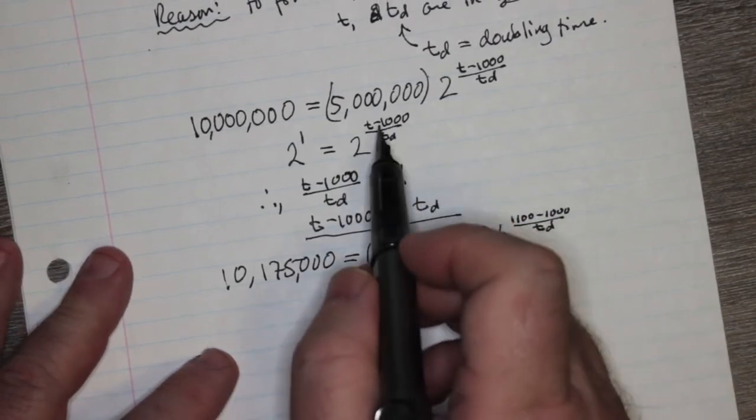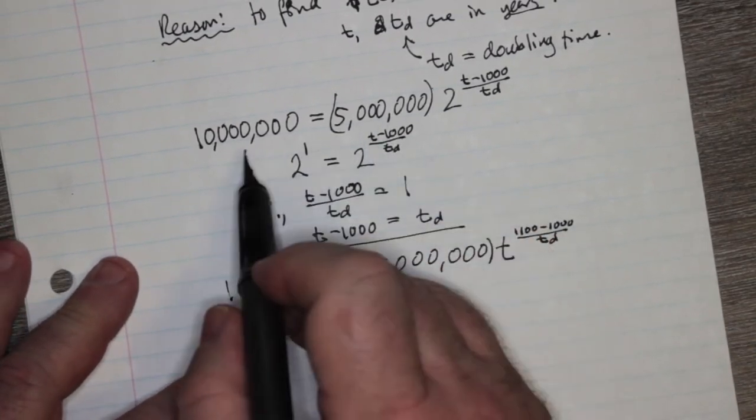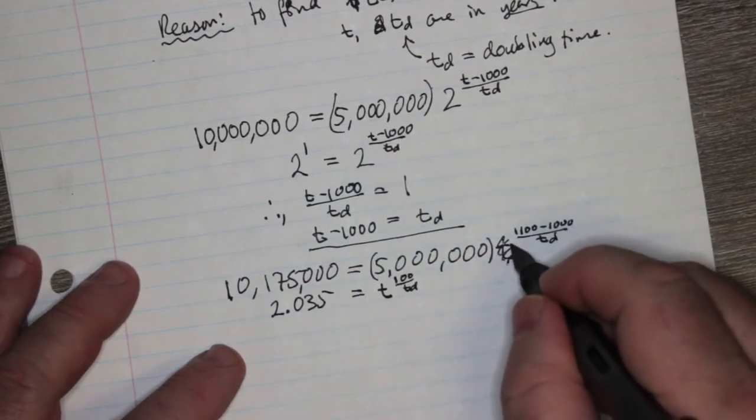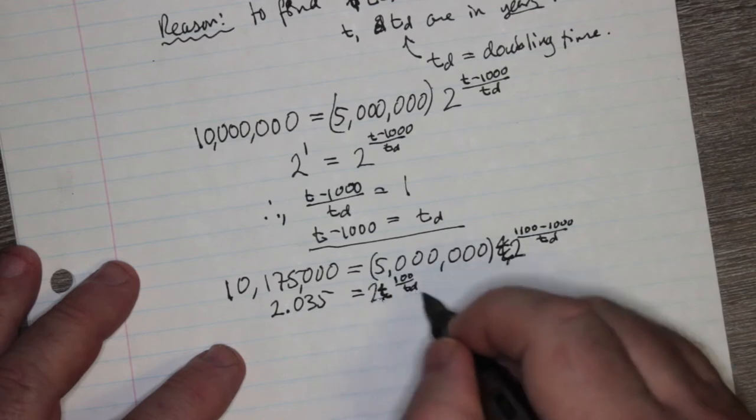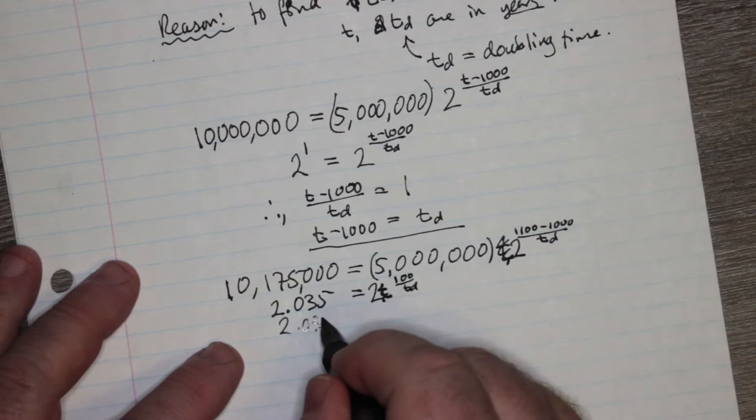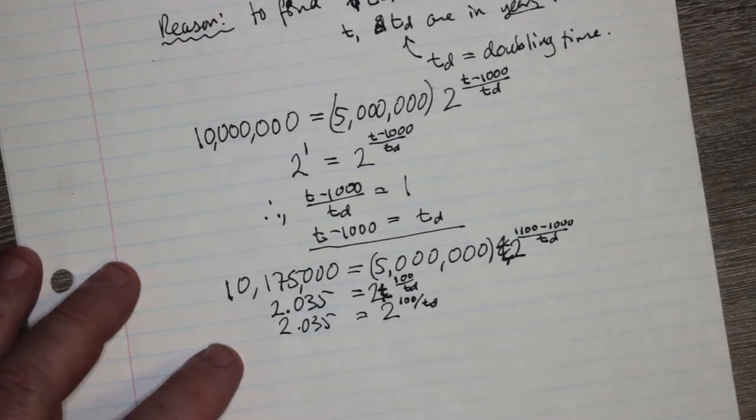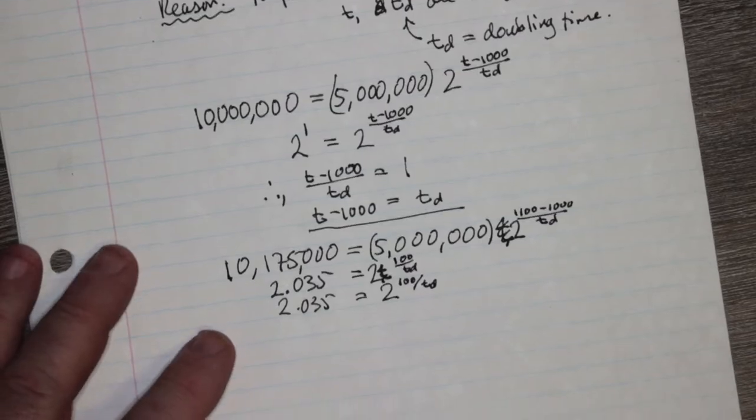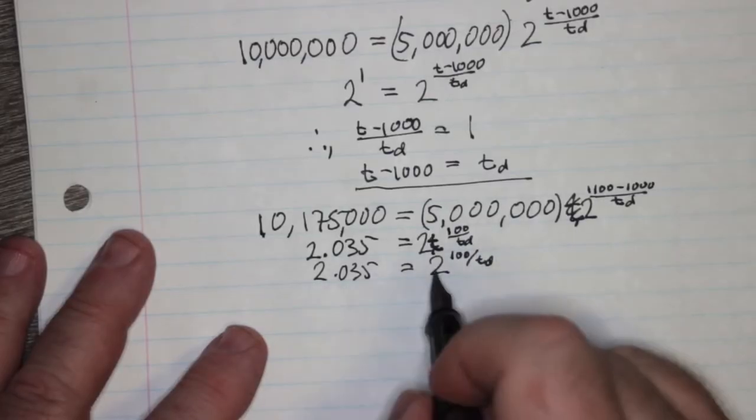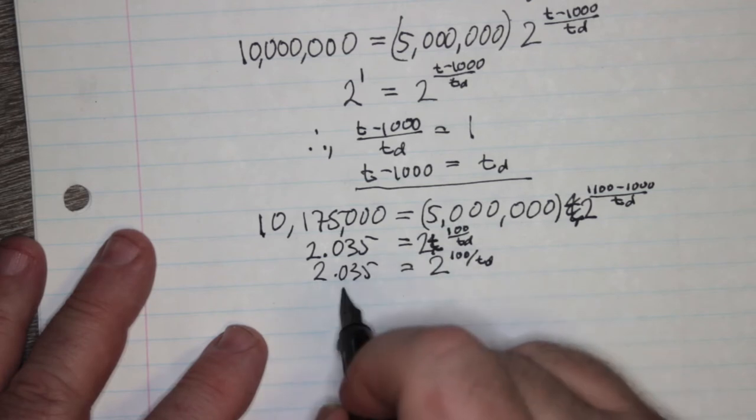And as before, like we did up here, we can divide both sides by 5 million. It's 2 to the power of 100 over td. Let's write that down again. 2.035. Now this looks a little better. So we can find 2 to the 100 over td, and we can find out where we land on 2.035 by guessing and checking.